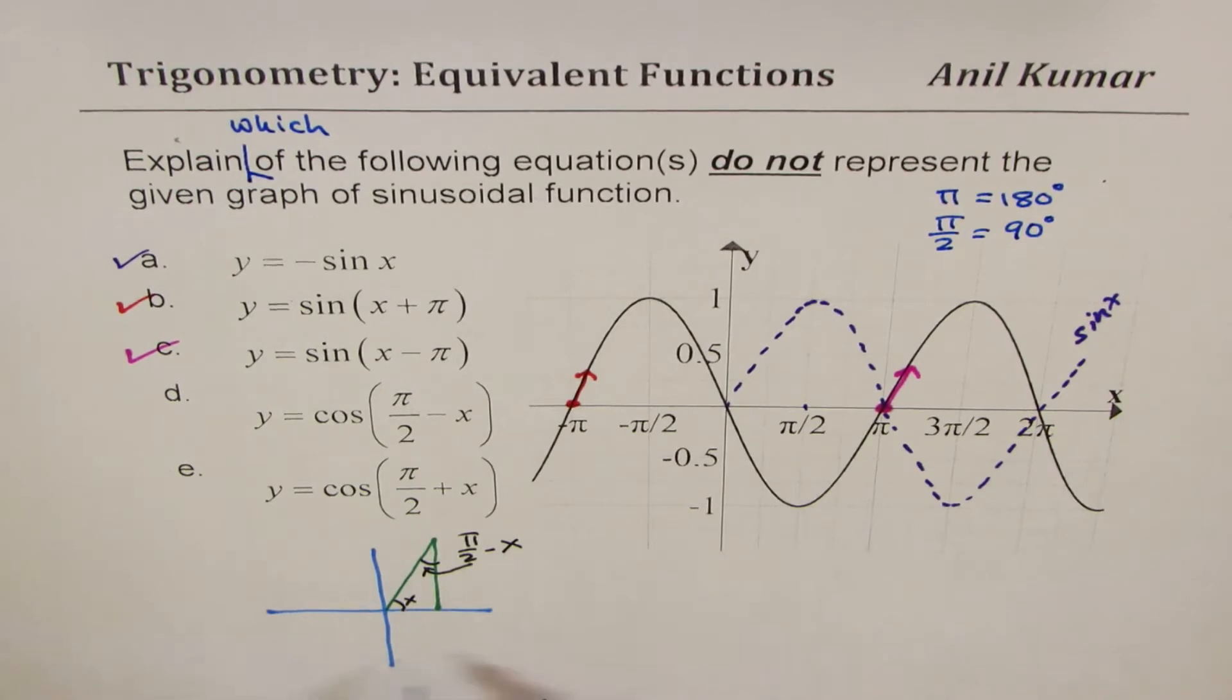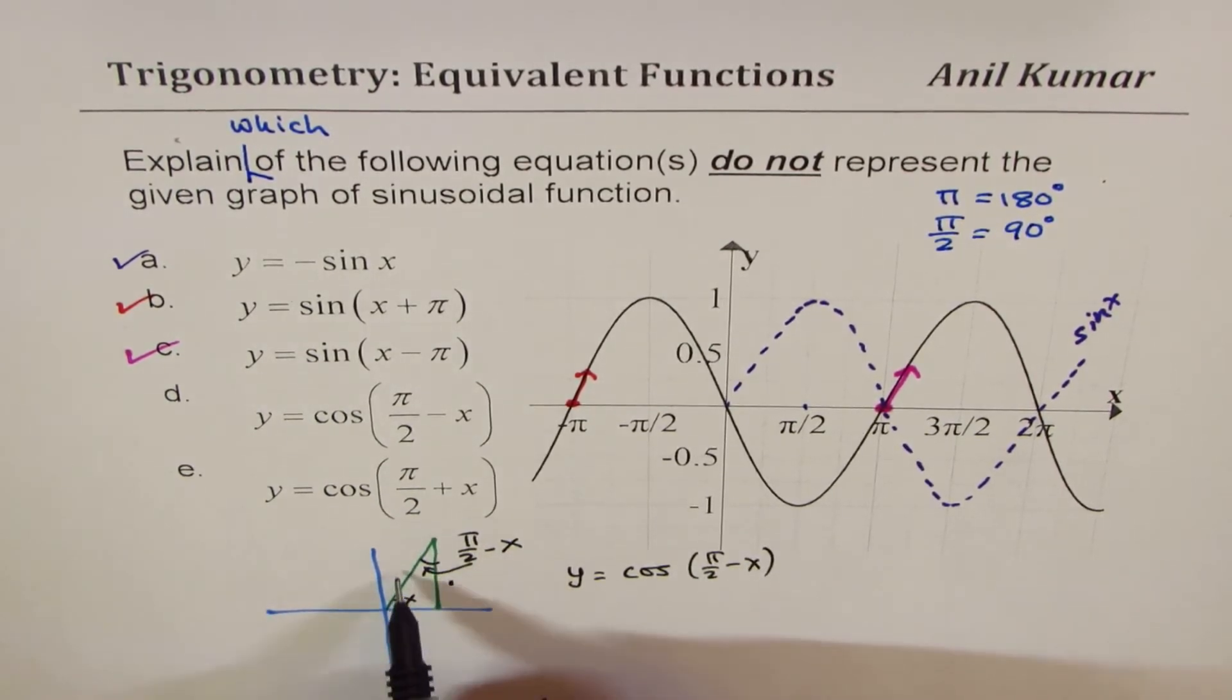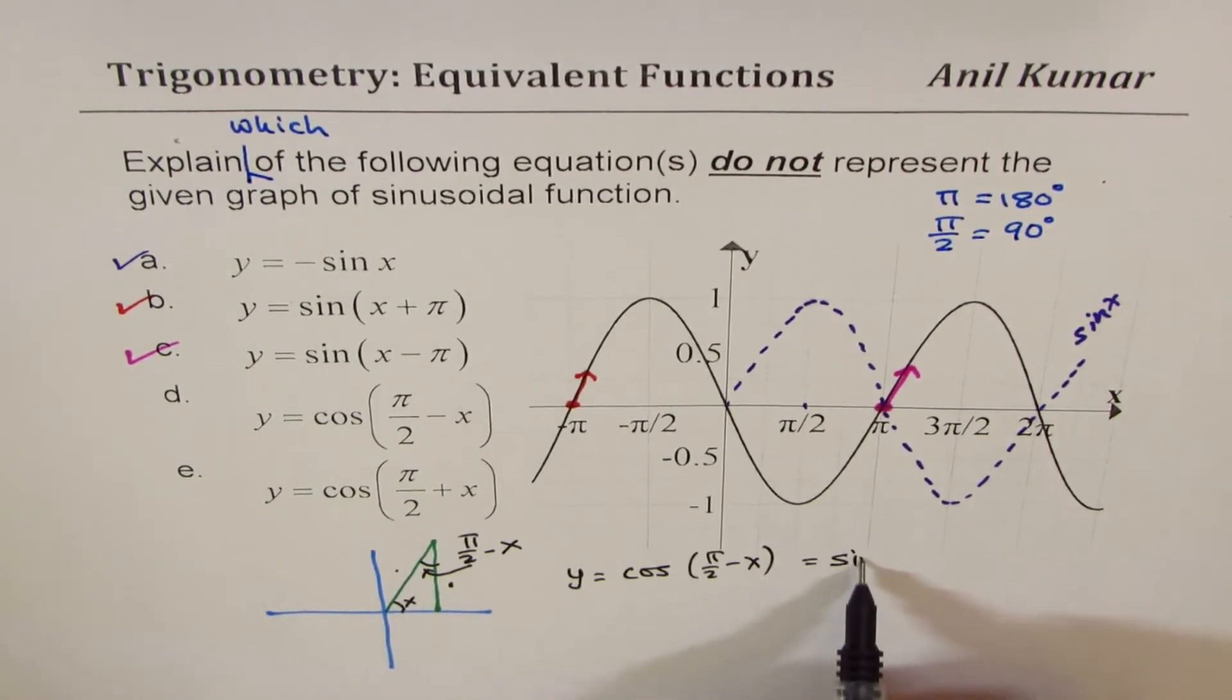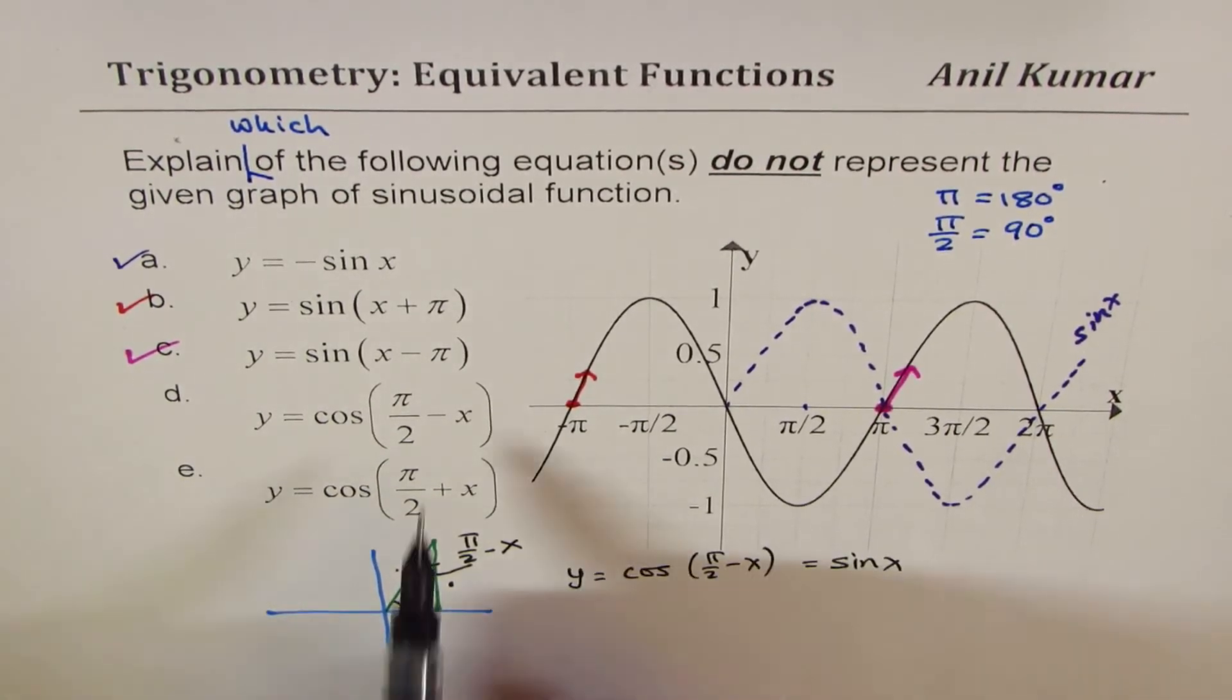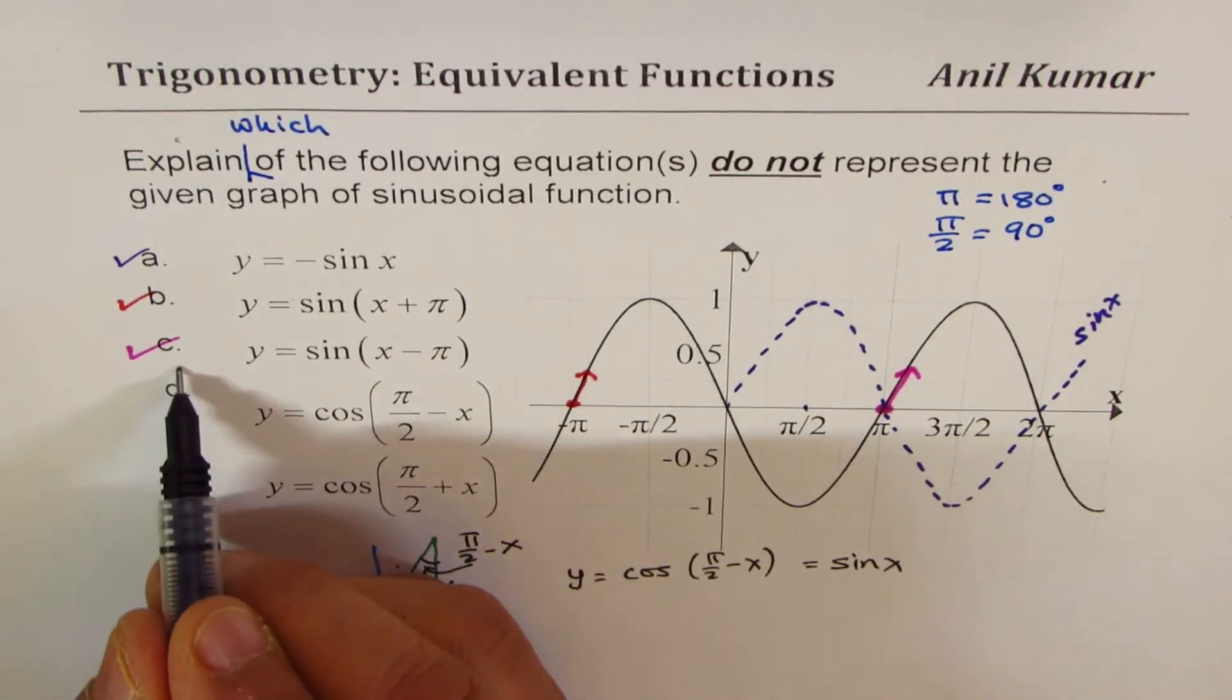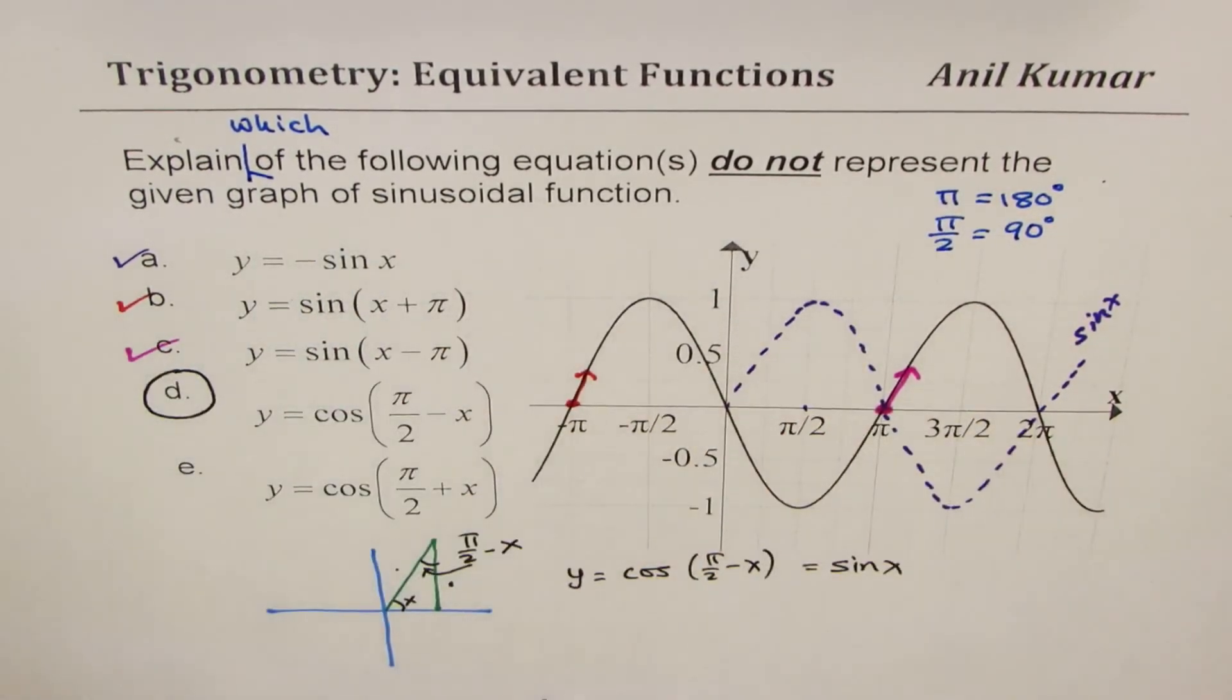So we could write this as, as we are looking at the sine x, now essentially minus y equals cos of pi by 2 minus x, and not minus x. Now since this one is sine x and not minus sine x, so this is the one which does not represent the given graph.